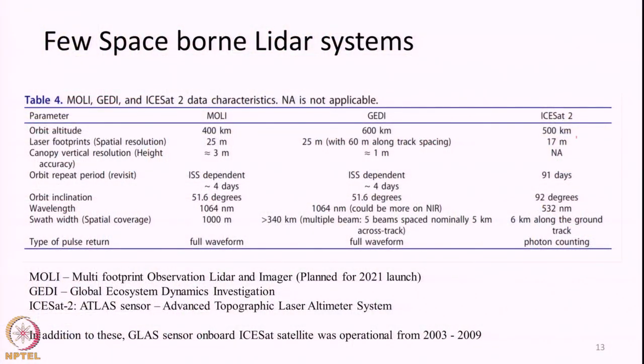Currently we have two operational LIDAR systems in space. One is ICESat-2, with an Advanced Topographic Laser Altimeter System called ATLAS — a much more developed version of the GLAS sensor on ICESat-1. ICESat-2 again has a major aim of measuring the topography of ice sheets, glaciers, and the world's forests. Its basic characteristics: an orbital altitude of around 500 kilometers, a laser footprint size of 17 meters, and an orbit return period of 91 days. The orbital inclination is 92 degrees — a near-polar orbit.